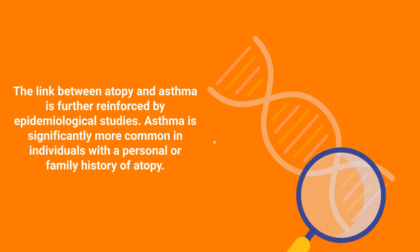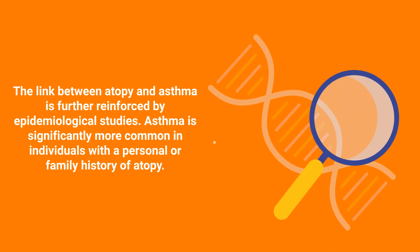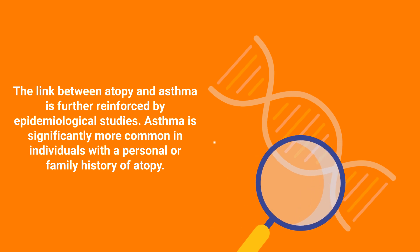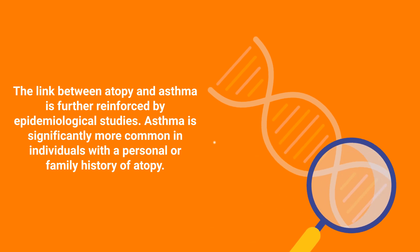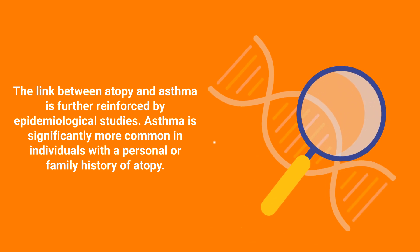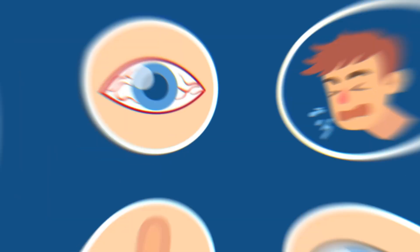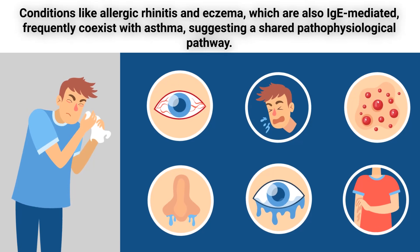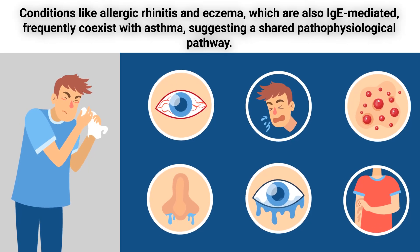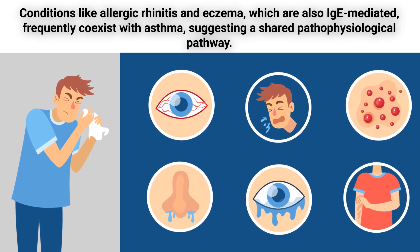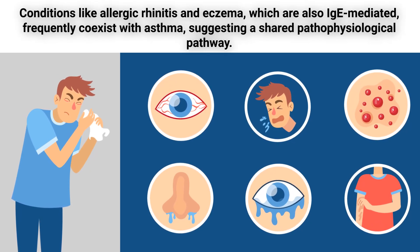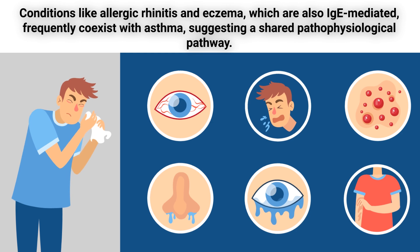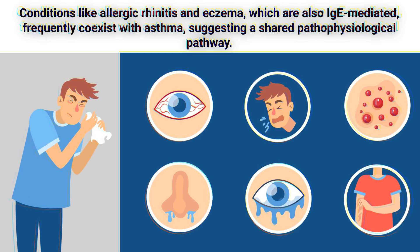The link between atopy and asthma is further reinforced by epidemiological studies. Asthma is significantly more common in individuals with a personal or family history of atopy. Conditions like allergic rhinitis and eczema, which are also IgE-mediated, frequently coexist with asthma, suggesting a shared pathophysiological pathway.